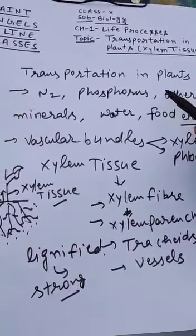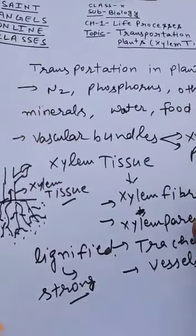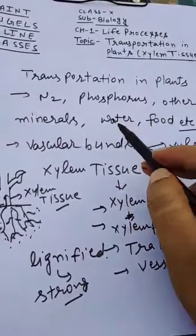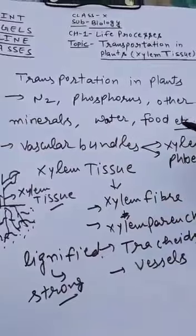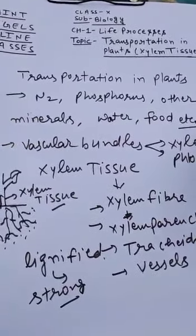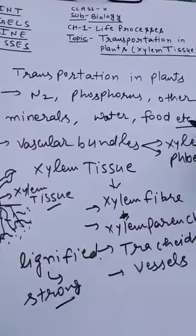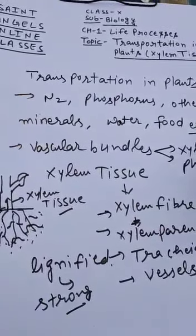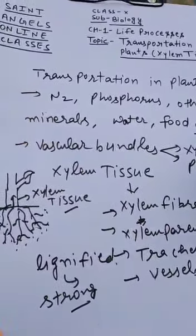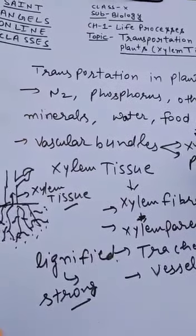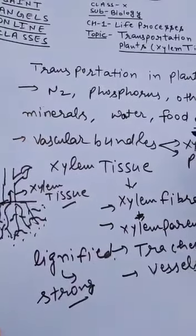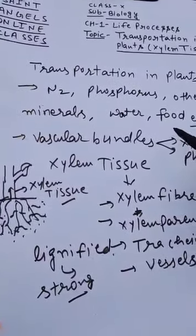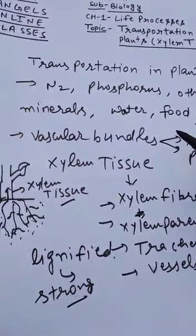Transportation in plants involves nitrogen, phosphorus, other minerals, water, and food. Nitrogen, phosphorus, and other minerals are transported through water and food sources. Now the question is: in plant bodies, how can these materials be transported? These materials in the plant body are transported...